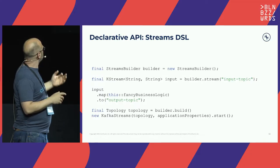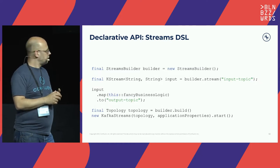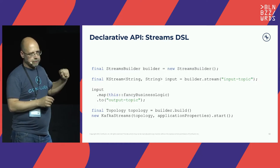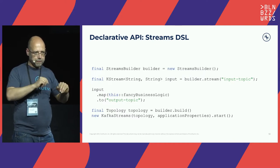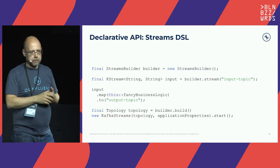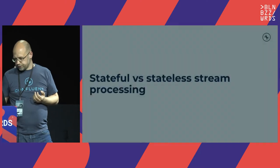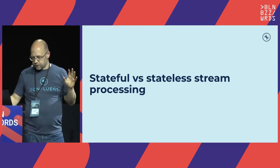Let's have a quick look at what this looks like. Here is the simplest Kafka Streams application: we open a topic called 'input-topic' as a stream, apply some business logic using a map so one input record becomes one output record, and output it to 'output-topic'. This leads to an important distinction between stateless and stateful stream processing.